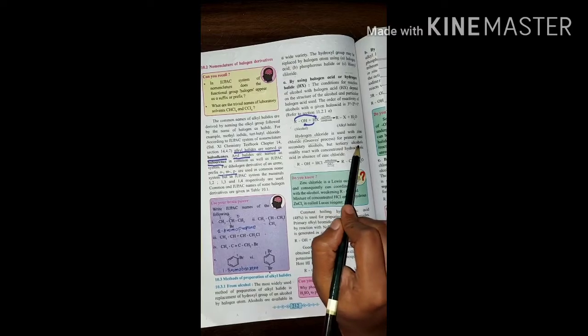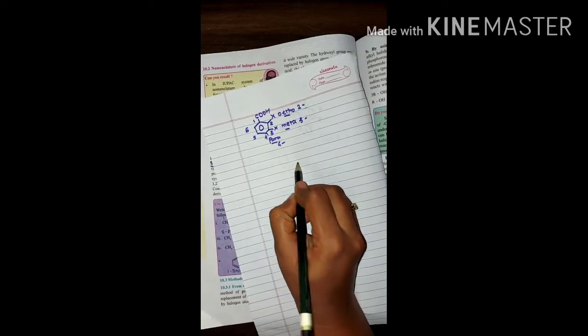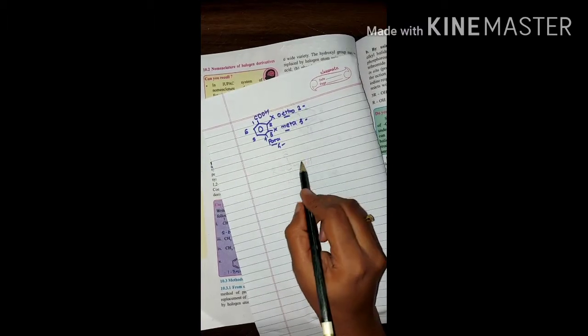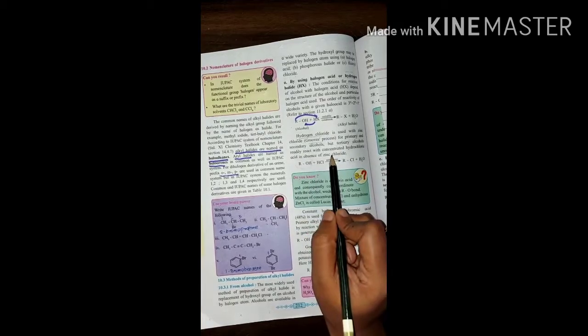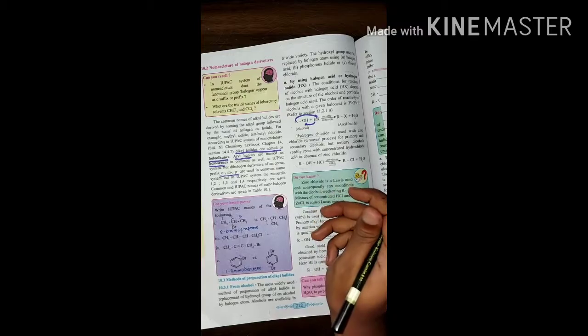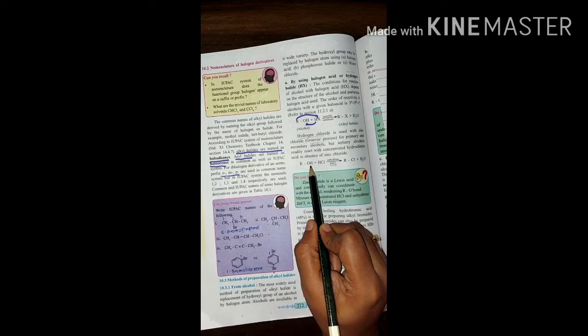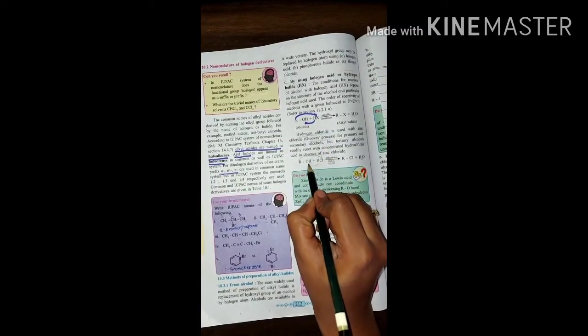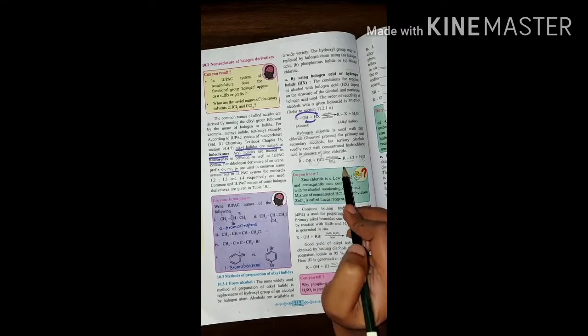But if we have tertiary alcohol, then concentrated hydrochloric acid is used in the absence of zinc chloride. So ROH primary or secondary plus HCl gives RCl, which is alkyl chloride, and H2O.